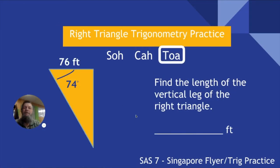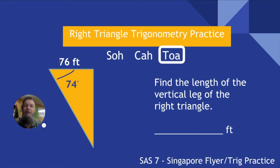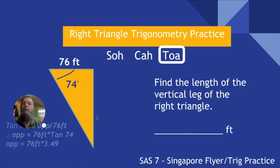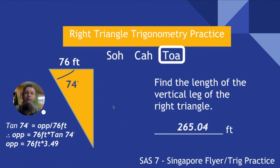Next problem: a right triangle with a 74-degree angle has a side adjacent to the angle that is 76 feet long. We want to find the vertical leg, which is the opposite side. We use tangent because tangent equals opposite over adjacent. So the opposite equals 76 feet times tangent of 74 degrees. Tangent of 74 is 3.49, giving an answer of 265 feet. You should know how to do this now — just do the work and put it into the calculator.